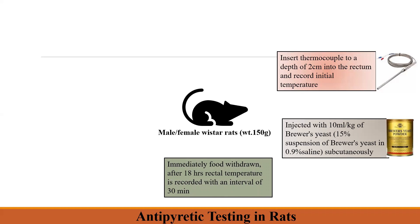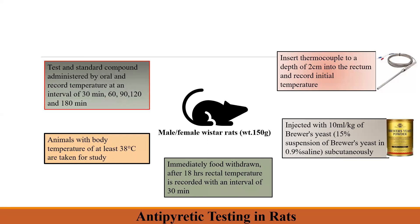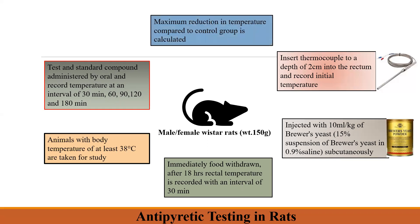Once the injection is given, the area should be massaged so that the suspension spreads equally, and animals are maintained at a temperature of 22 to 24 degrees Celsius. Food is withdrawn immediately after 18 hours. The rectal temperature is recorded at intervals of 30 minutes. Animals with body temperature of at least 38 degrees centigrade are taken for the study and considered as having fever. Then the test and standard compounds are administered by a suitable route, and temperature is recorded at 30, 60, 90, 120, and 180 minutes. The maximum reduction in temperature is recorded for the test compound compared to the control, and the percentage reduction is calculated with suitable statistics applied for comparison.